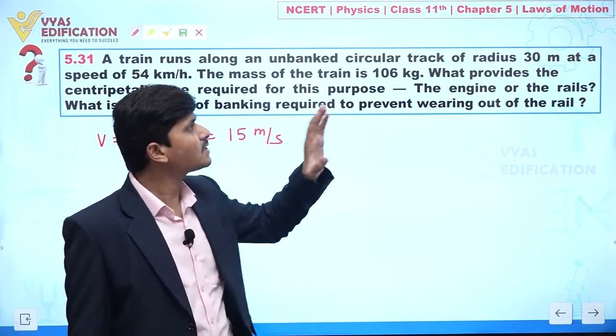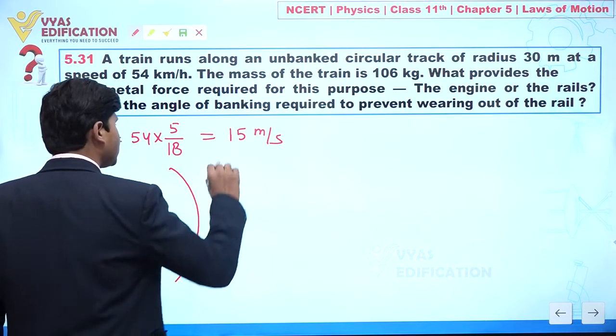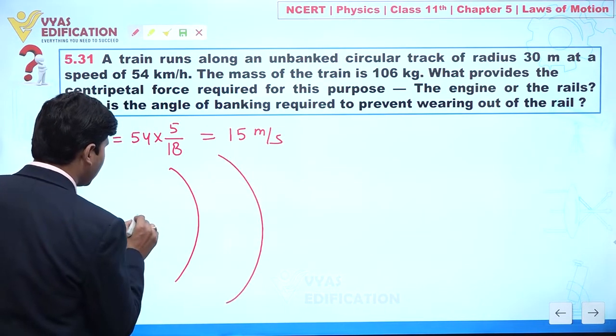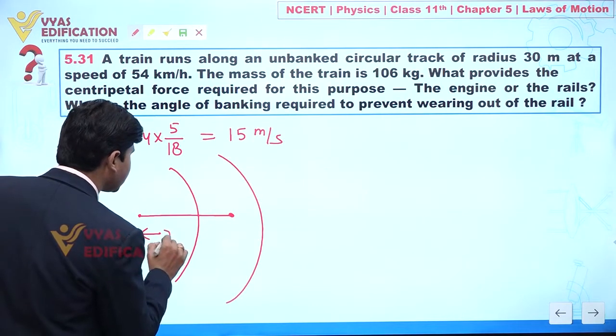It is also given that the train runs along an unbanked circular track of radius 30 meters. Let us suppose here we have this unbanked circular track. Let us suppose from the center I am taking this as the position of the train and the radius is r, and the value of r we have as 30 meters.